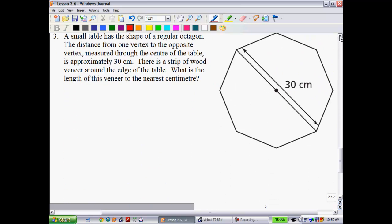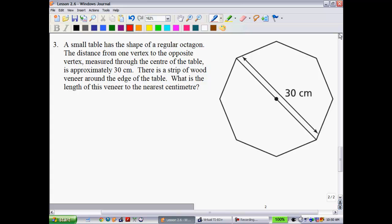Alright. One that's a little bit more difficult and we'll do together is number three. You're more than welcome to try this one on your own. Let's get started. A small table has the shape of a regular octagon. The distance from one vertex to the opposite vertex measured through the center of this table is approximately 30 centimeters. There is a strip of wood veneer around the edge of the table. What is the length of the veneer to the nearest centimeter? Well, a little bit of work we got to do here.